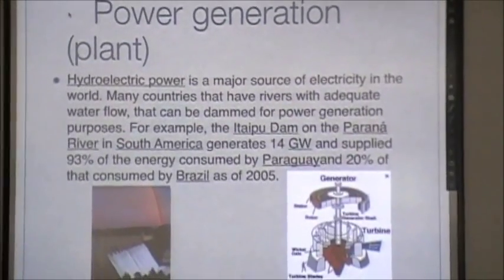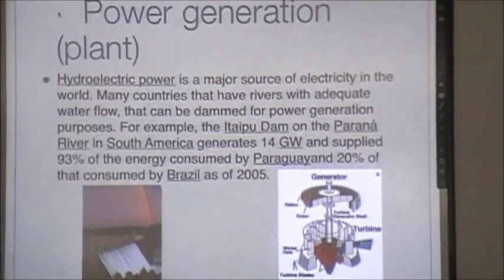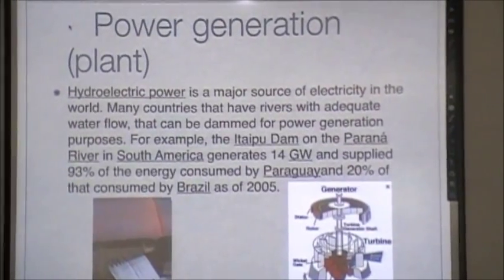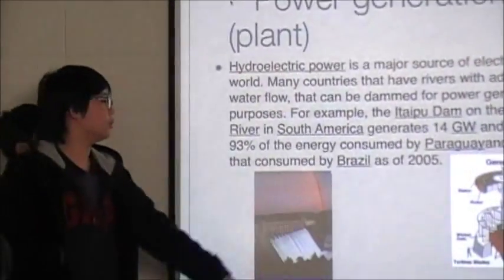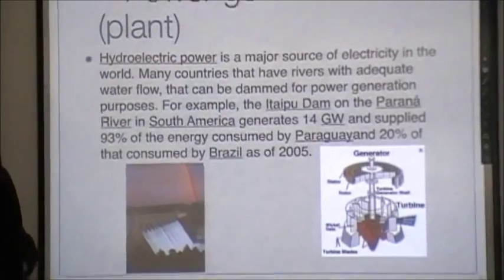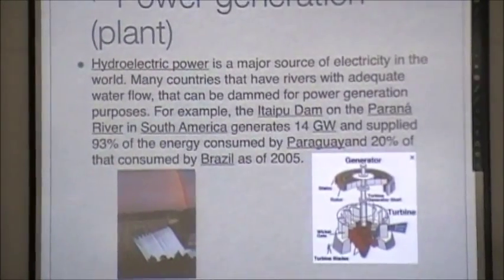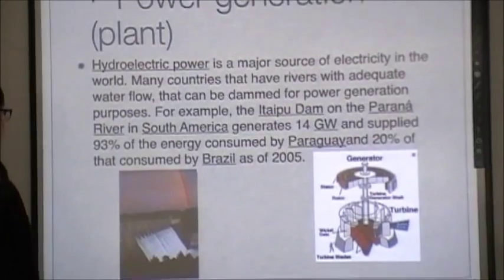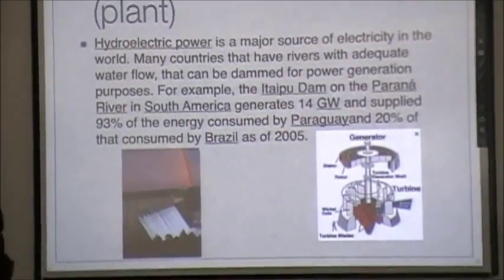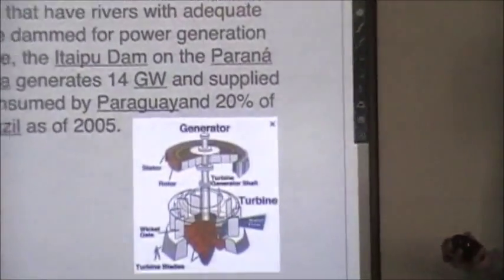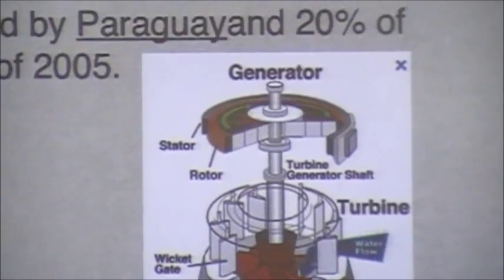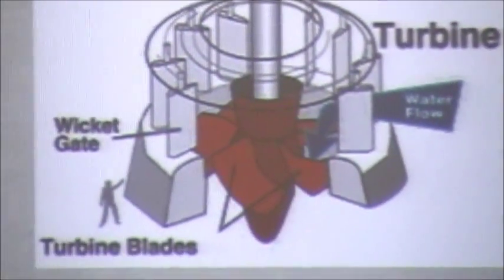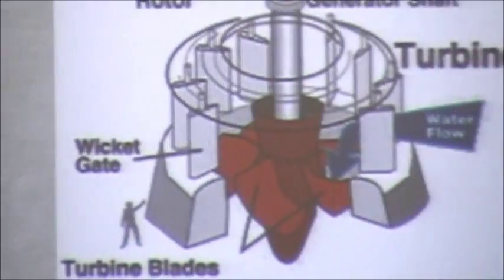Power generation. Hydroelectric power is created from most of the dams, from the generator, which creates the power. For example, the Itaipu Dam in the Paraná River in South America generates 14 gigawatts, and supplies 93% of the energy consumed by Paraguay, and 20% consumed by Brazil as of 2005.